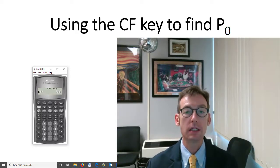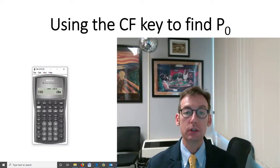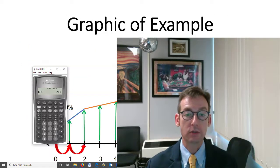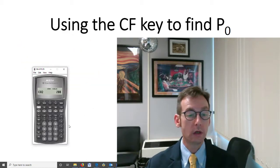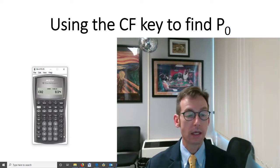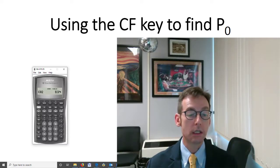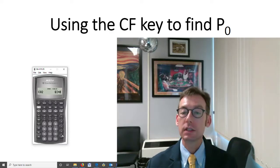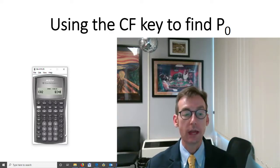Now we have C0, C01, and C02 entered. We want the sum of the present values of all those cash flows, and the NPV key does exactly that. The required return is 10 — this is the only place we use a full percentage number instead of the decimal equivalent. Arrow down, then compute. The stock should be selling for $54.55. That means P2 = $60.48 at time two, and the sum of all present values is $54.55.